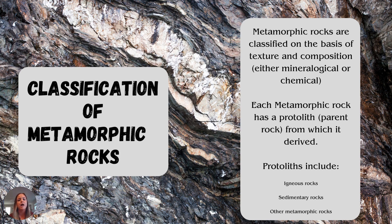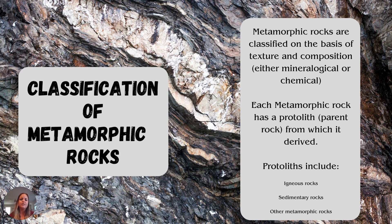Metamorphic rocks are classified on texture and composition — like most other rocks. We start with their texture, and then we look at what they're made of. The composition can either be mineralogical or chemical. Each metamorphic rock has a parent rock, or protolith, from which it was derived. Those protoliths are going to be igneous rocks, sedimentary rocks, or other metamorphic rocks.